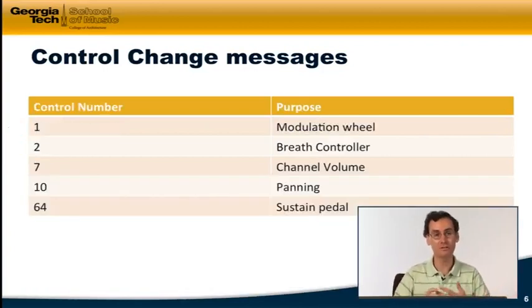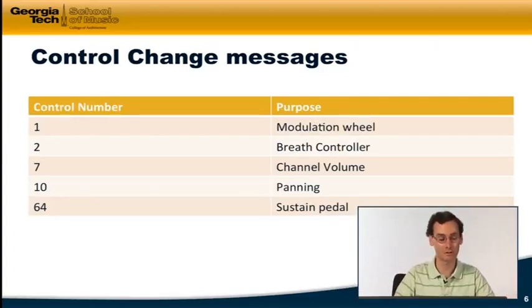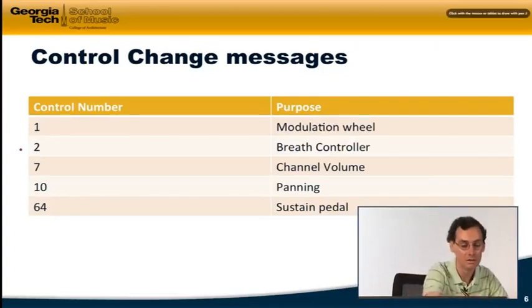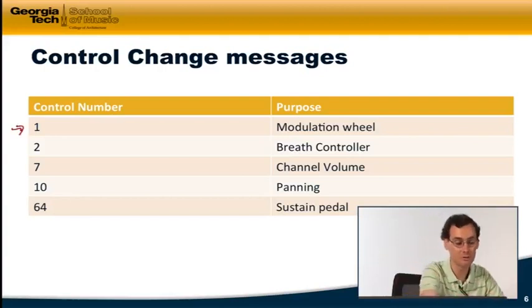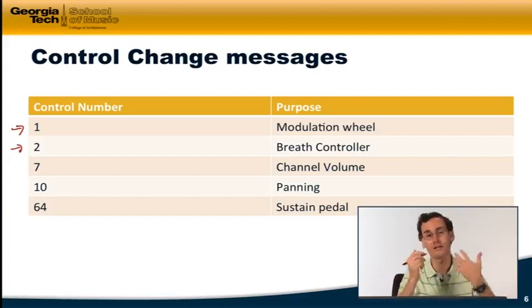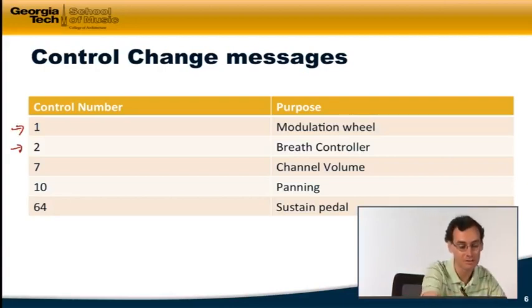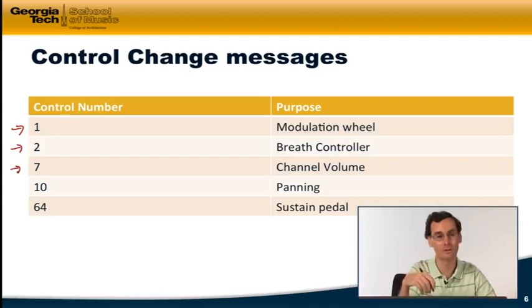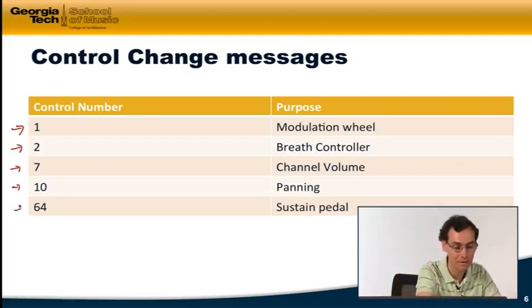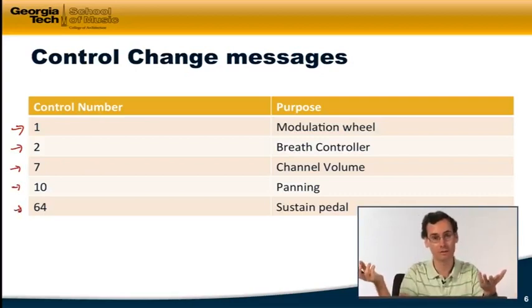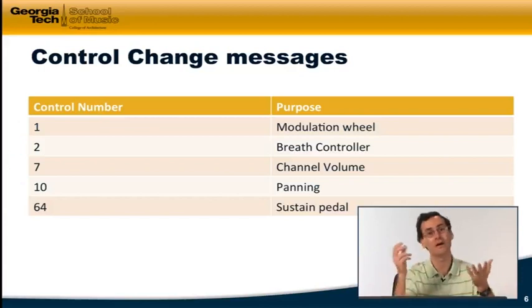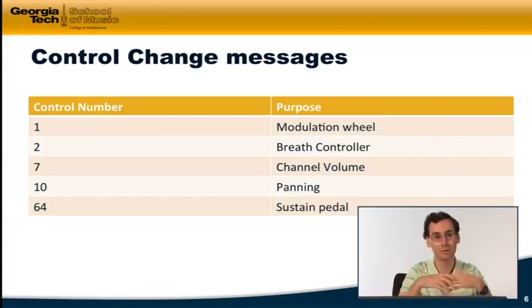Now the MIDI specification defines what certain controller control change numbers are by convention. So number 1 is a modulation wheel - how much vibrato there is typically. Number 2 is a breath controller, like on that electronic wind instrument that we saw in the last video. Channel 7, control change 7 I'm sorry, is the volume on the channel. 10 is panning. 64 is whether a sustained pedal is on with a value of 127 or off with a value of 0. And there's some others that are defined that are somewhat more obscure.